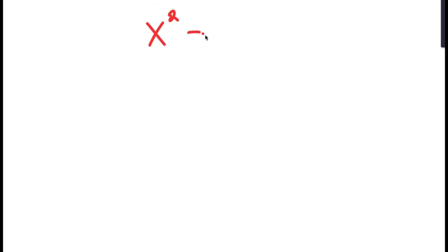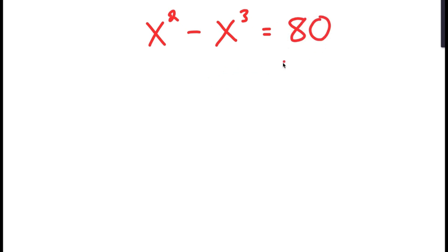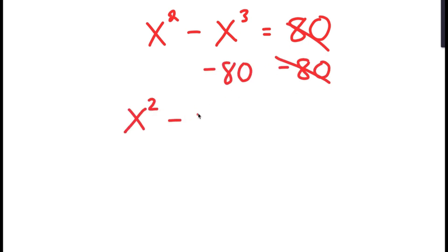In this video, I'm going to solve the equation x to the power of 2 minus x to the power of 3 is equal to 80. To solve this equation, I'm first going to subtract 80 from both sides. So now I get x squared minus x cubed minus 80 is equal to 0.